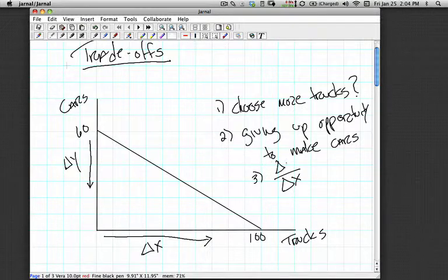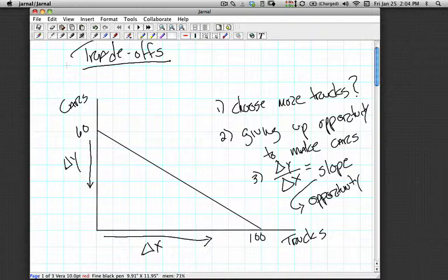And of course, we know what we're talking about here. We're looking at how y changes with respect to x, changes in x, and that's going to be the slope of the PPF. And in fact, that slope is going to represent the choice I make to substitute trucks for cars, or the opportunity cost of trucks in terms of cars.